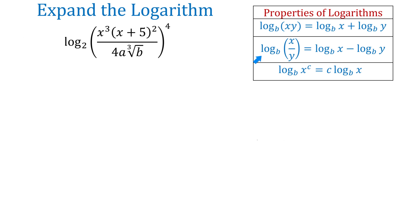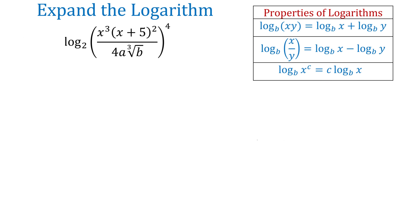In the quotient rule, the logarithm of a quotient equals the difference of two logarithms. So, log base b of x over y is expanded as log base b of x minus log base b of y. And in the power rule, the logarithm of an exponential expression has the exponent moved in front of the logarithm. So, log base b of x to the power of c equals c times log base b of x.